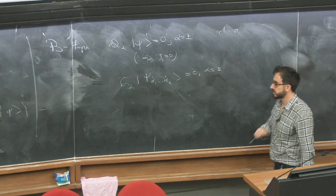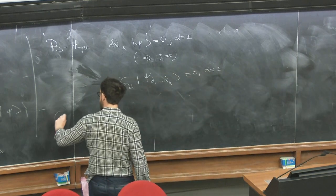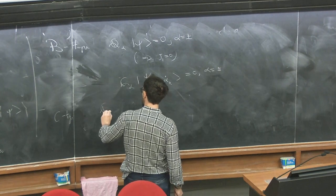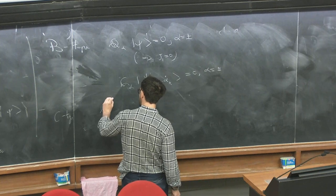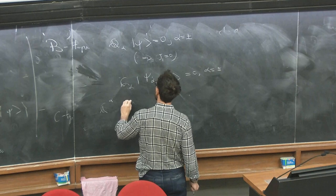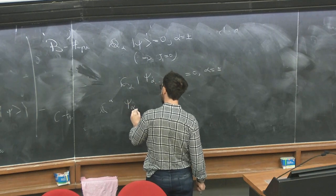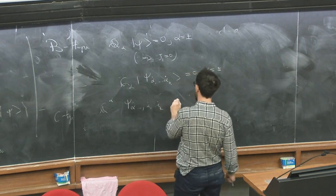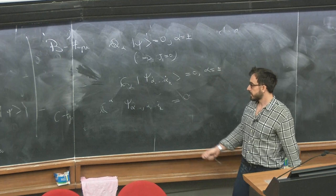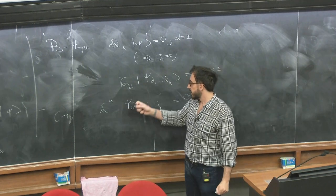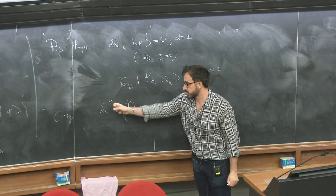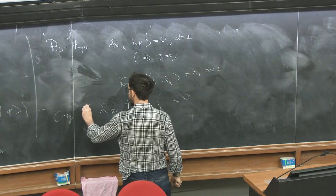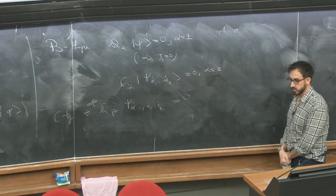The C-type condition is where I contract the alpha index with an alpha index. This can have a bunch of alpha and alpha-dot indices, and clearly this is a weaker condition: the B-type gives two conditions while C-type gives a single contracted one. I'm just contracting the SU(2) indices with an epsilon. I've done this for Q but there is completely analogous condition for Q-tilde.